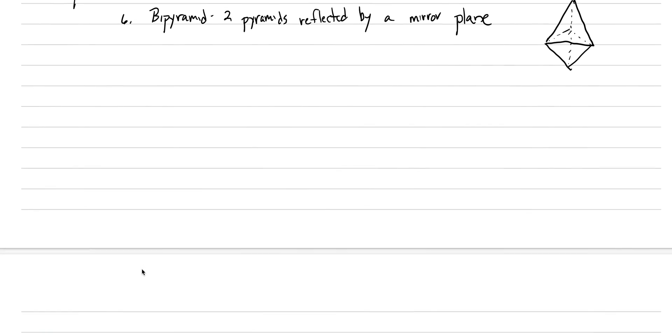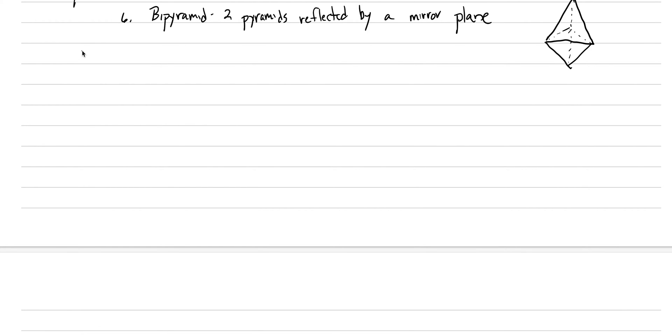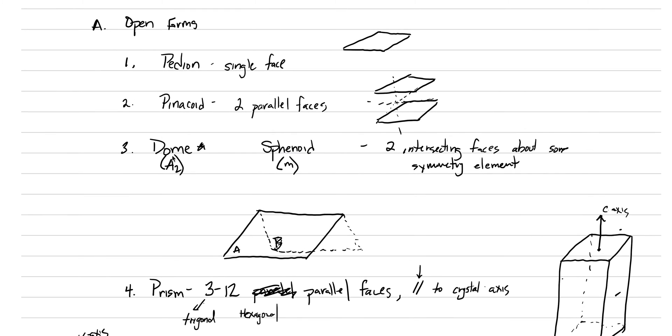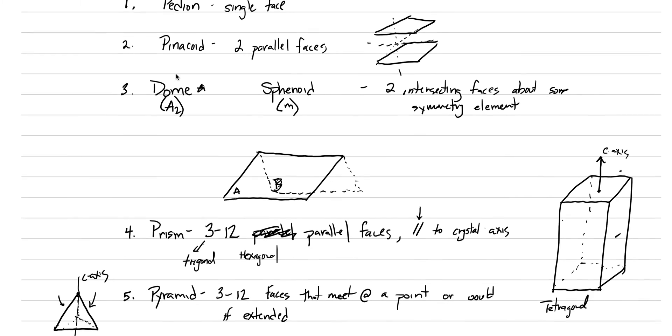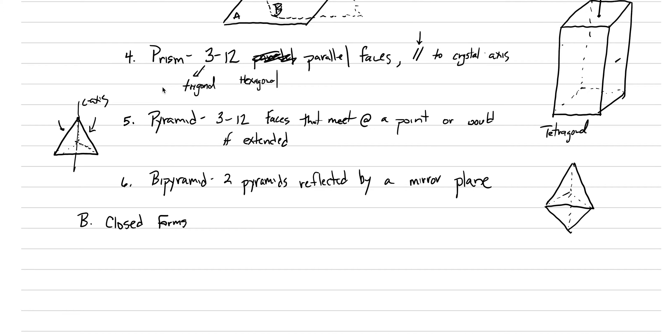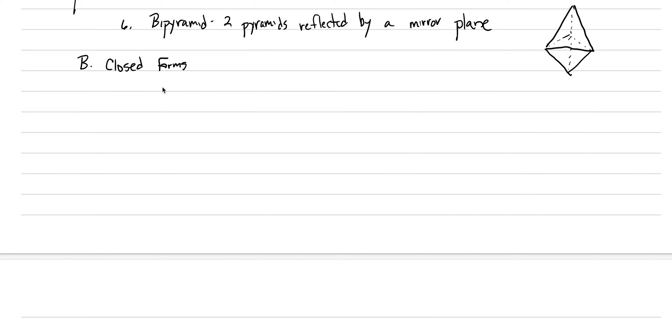Then there's closed forms. We'll finish off this lecture with closed forms. Closed forms reflect higher symmetry. That's the most important point here. So in our triclinic system, you only see pedions and pinacoids. These are things you see in triclinic and in monoclinic and orthorhombic. By the time you get to prisms and pyramids, we're probably dealing with hexagonal and tetragonal crystal systems. And by the time you're at closed forms, these are only the higher symmetry systems. It's only going to be in the isometric system, in the hexagonal system, and in the tetragonal system.